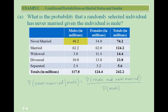Male and never married is the value in that column and row, which is 40.2 million. We divide that by the total number of males, which is 117.8 million. We get a value of about 0.341, which means approximately a 34.1% probability that the randomly selected individual has never married given that he is male.